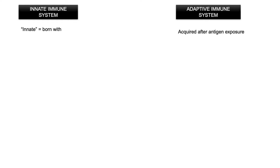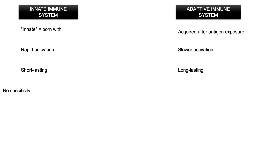Innate immunity is rapidly activated, while adaptive immunity is slower to respond. In the same vein, innate immunity is short-lasting and adaptive immunity is long-lasting. The innate immune system shows no specificity and no memory. In contrast, adaptive immunity shows high specificity towards antigens on pathogens.